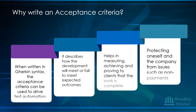Having a list of conditions you can go over and tick off shows your work is complete. It also helps protect yourself and the company from issues such as non-payment, because you're able to show how you've met expected outcomes. So remember we mentioned Gherkin syntax. For user stories we said the format is 'as a, I want to, so that.' For the acceptance criteria, one way of writing it is using the Gherkin syntax — the behavior-driven development syntax of Gherkin.